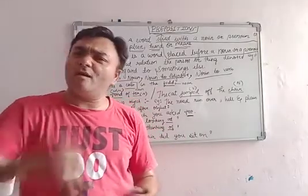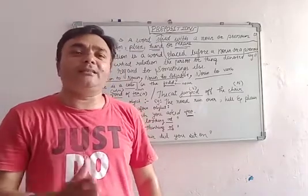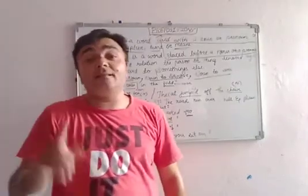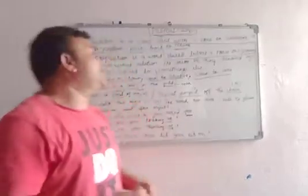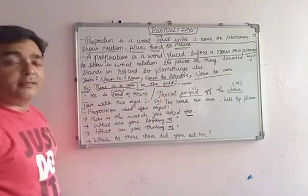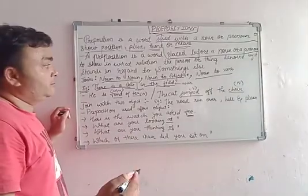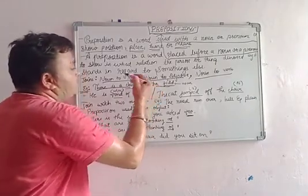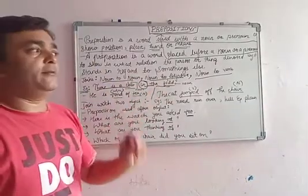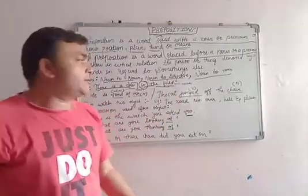Just like conjunction, prepositions are also in their own category. They are generally used before a noun or pronoun, but they can also be used after a noun or pronoun. Let's have an example: 'There is a cow in the field.' Here, 'cow' is a noun and 'field' is also a noun. The big question is: where is the cow? The cow is in the field — so 'in' is the preposition.